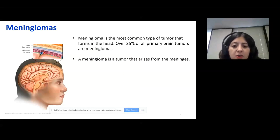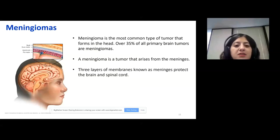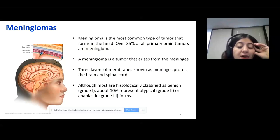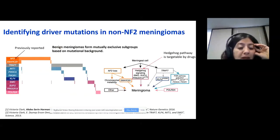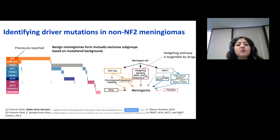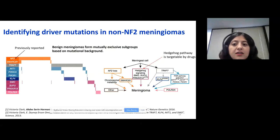A meningioma is a tumor that arises from the meninges — the three-layer membrane that protects the brain and the spinal cord. Most are histologically classified as benign. About 10% of meningiomas are atypical or anaplastic. In this project, we tried to understand the benign grade one meningiomas. Previously it has been reported that NF2 mutation is one of the driver mutations in meningiomas.